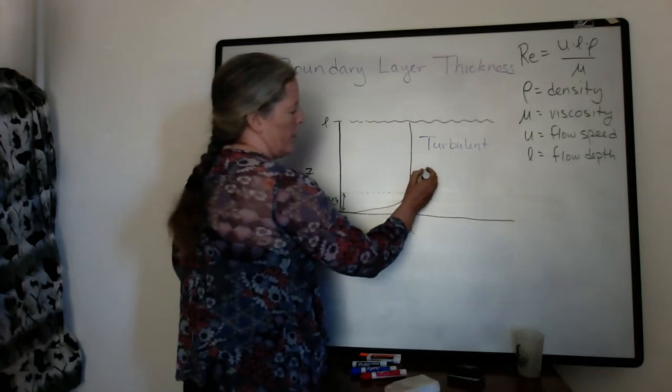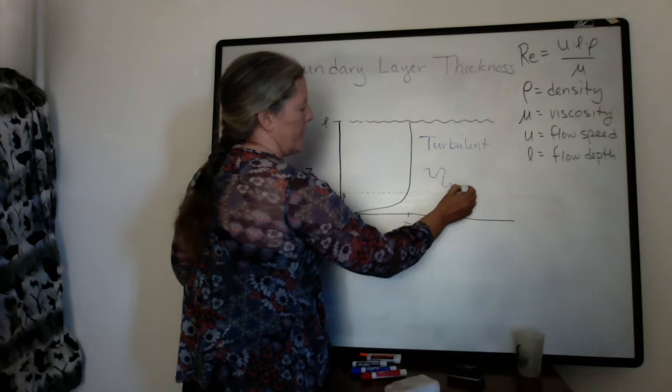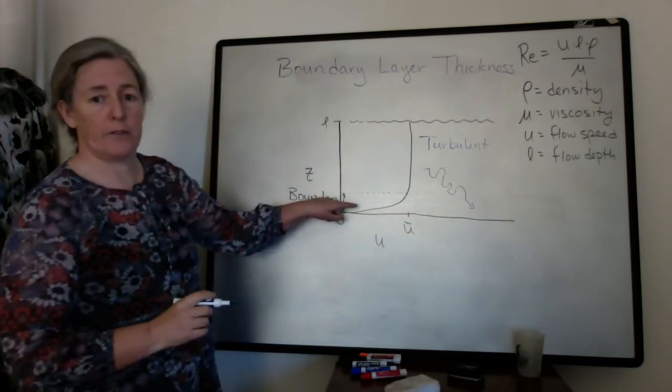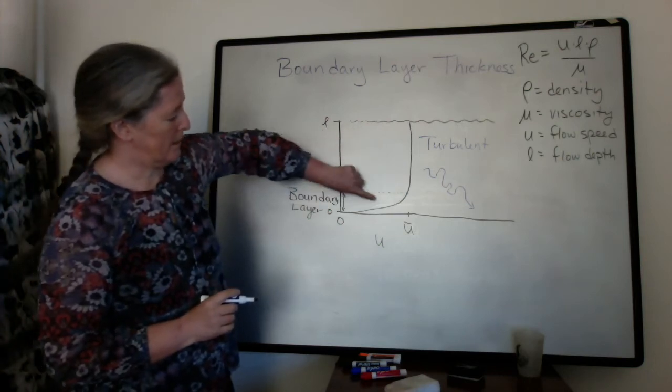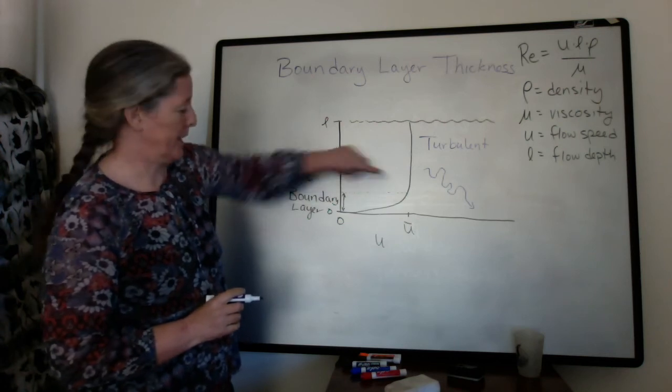And as we know, the turbulence, the parcels of water move really irregularly, and sometimes they move down into this boundary layer. And that's one of the ways that the flow speed is increased at the top of the boundary layer.